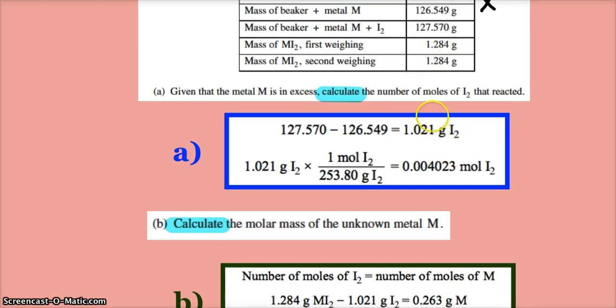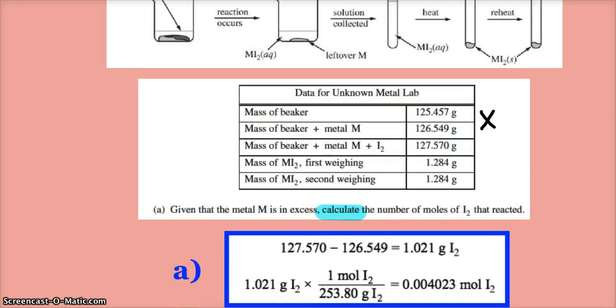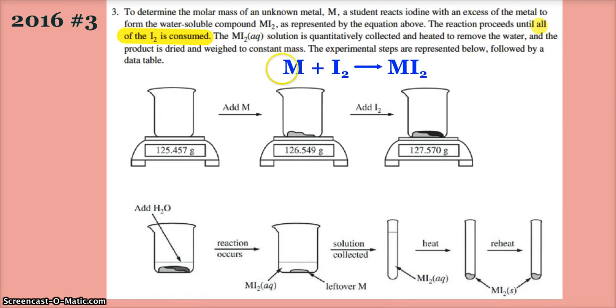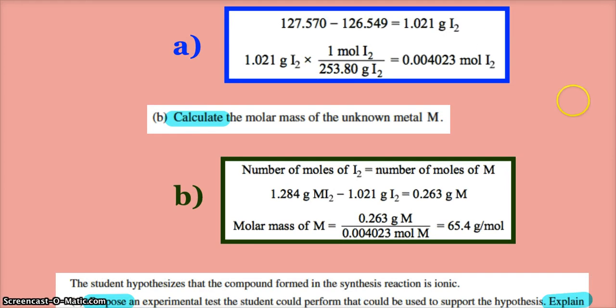So I have to use this information: my 1.284 grams of MI2 minus my grams of iodine that are in there. So there's only 0.263 grams of metal that's in the MI2. But since it's equimolar, it's a one to one mole ratio, then I have the same moles of metal as I do iodine.